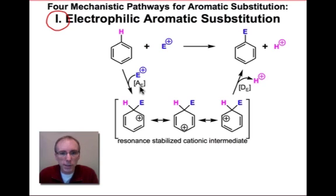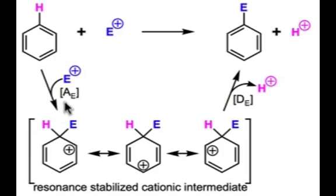It's a two-step process of addition followed by elimination. The addition step is an electrophile association step and uses the benzene ring's π system as the nucleophile. The elimination step is a dissociation of an electrophile and recreates a carbon-carbon double bond in the benzene ring.